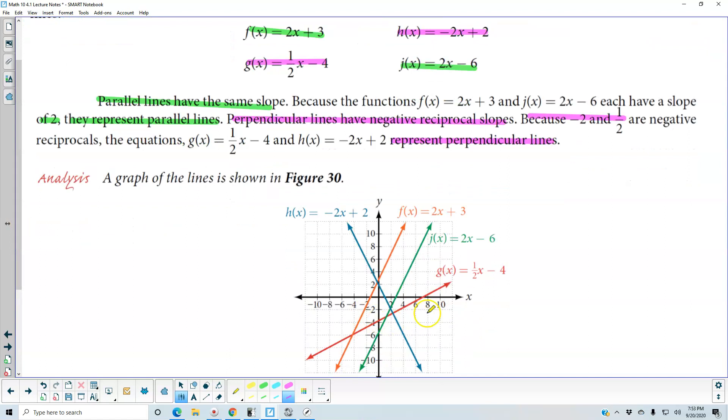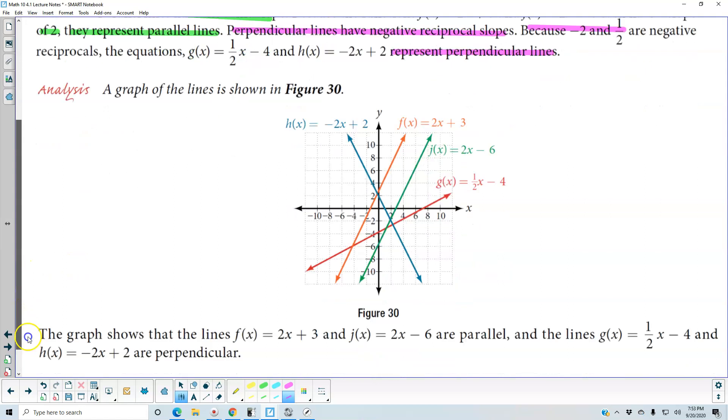A graph of the lines is shown here. The orange and green lines are parallel, and the blue and red lines make a right angle, so therefore those are perpendicular lines.